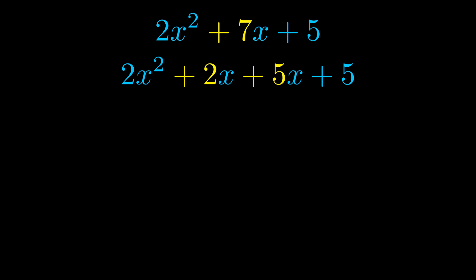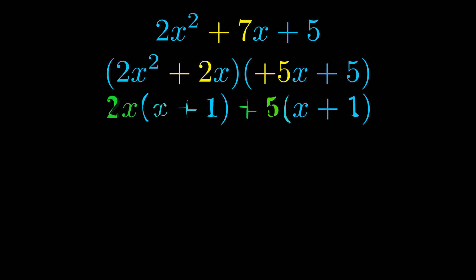Once we've done this we put parentheses around the first term and the last term, and we do that so that we can take the greatest common factor out of both terms. We can see the greatest common factor is now outside in green.